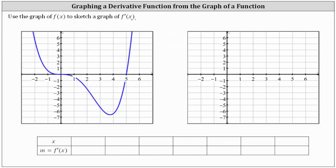Let's begin by determining the points on the graph of f of x where the tangent line would be horizontal. Notice this would occur at x equals zero at this point here, as well as this point here — let's say x is 3.8. Let's go ahead and sketch the tangent lines. We know the slope of a horizontal line is always zero, which means the derivative function values are zero at x equals zero as well as x equals 3.8. Let's record this in the table below: when x equals zero, the slope of the tangent line and the derivative function value is zero; at x equals 3.8, the slope and derivative function value is also zero.